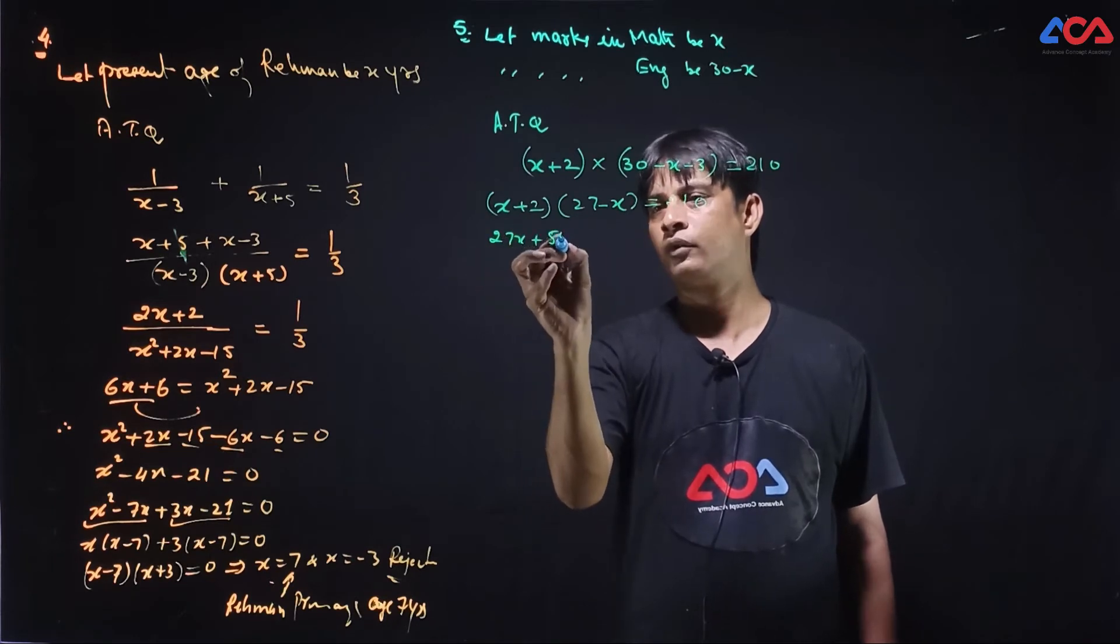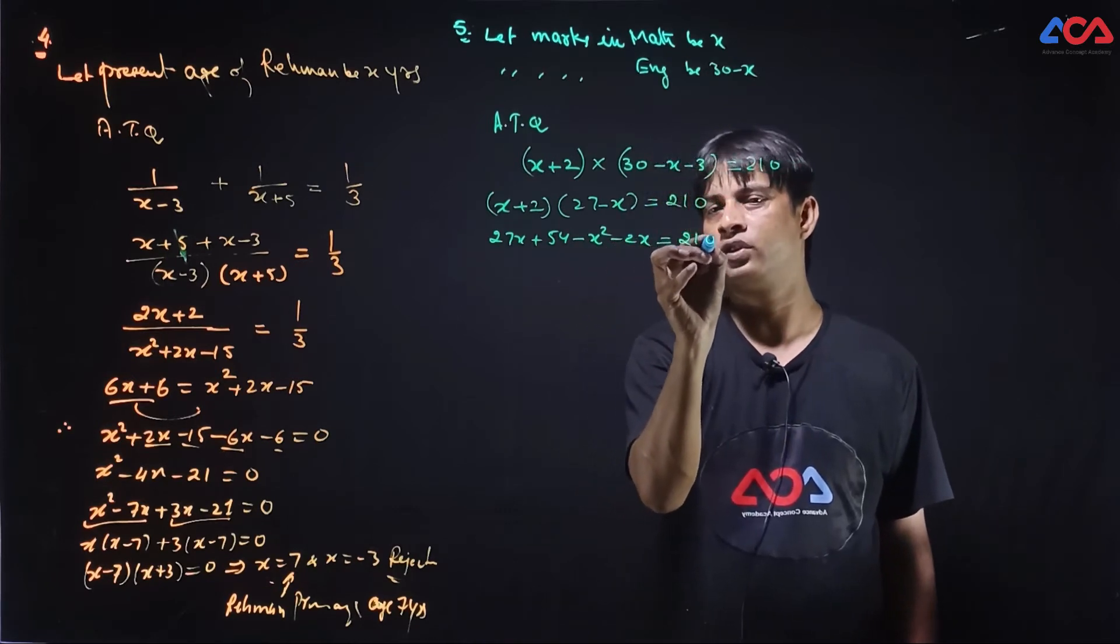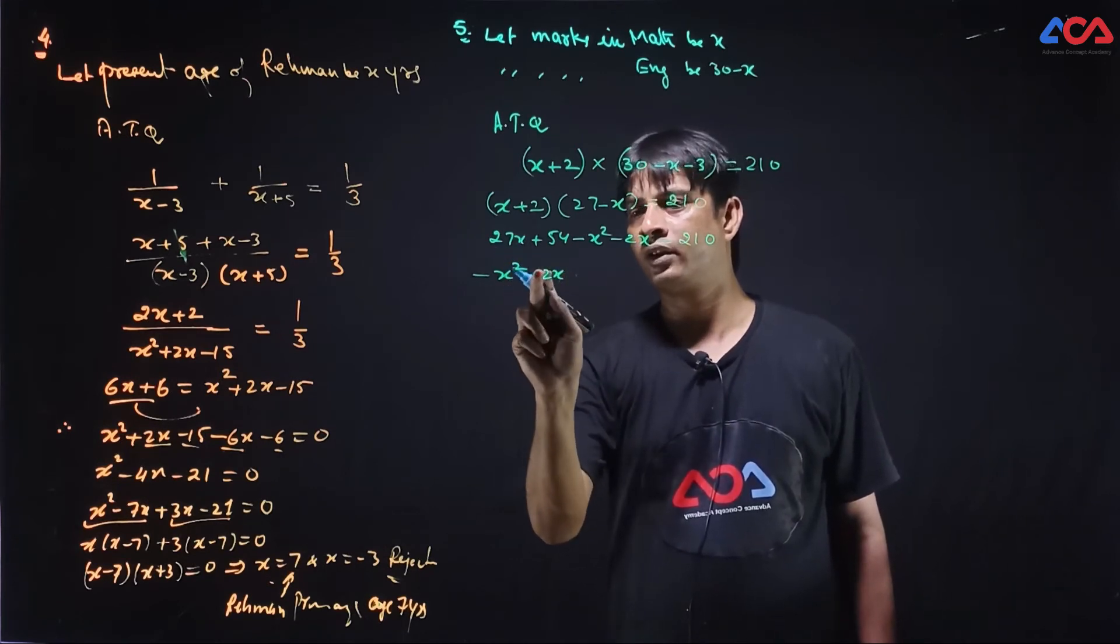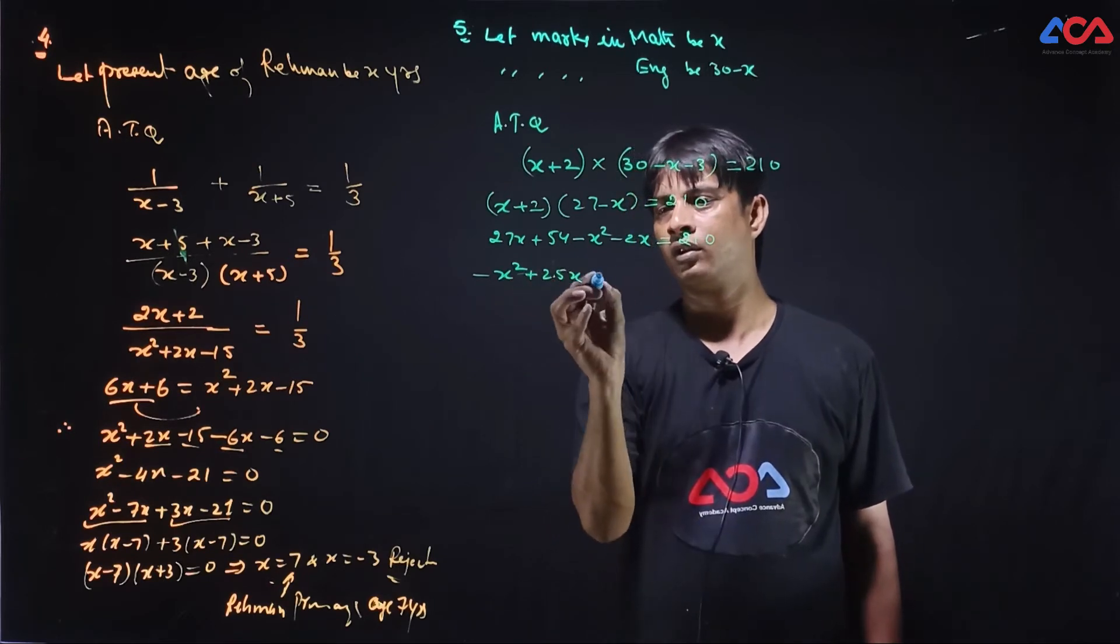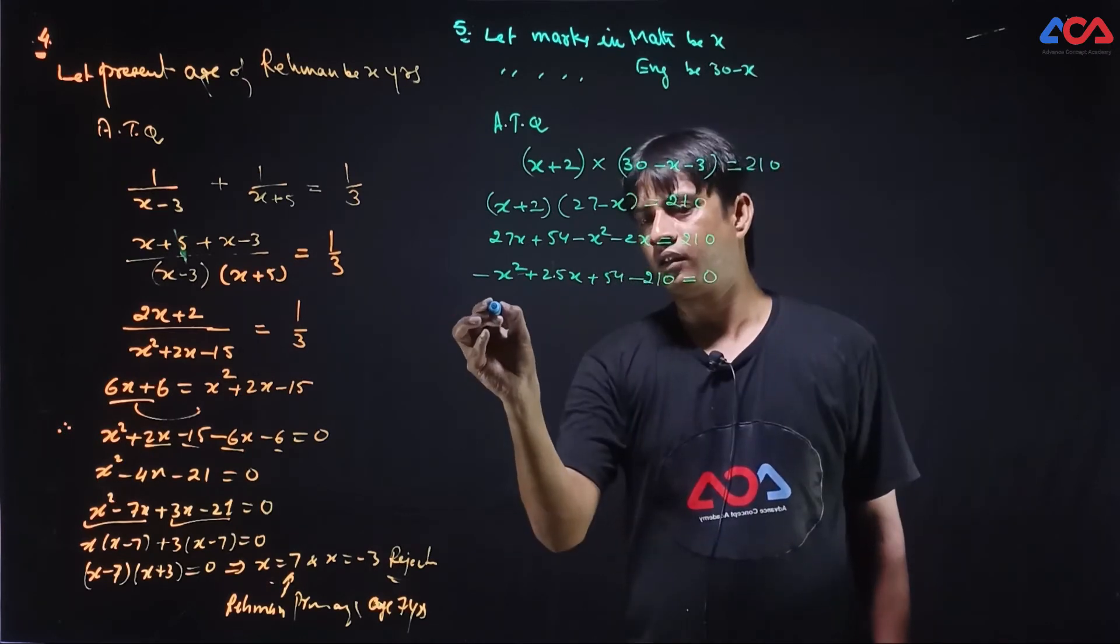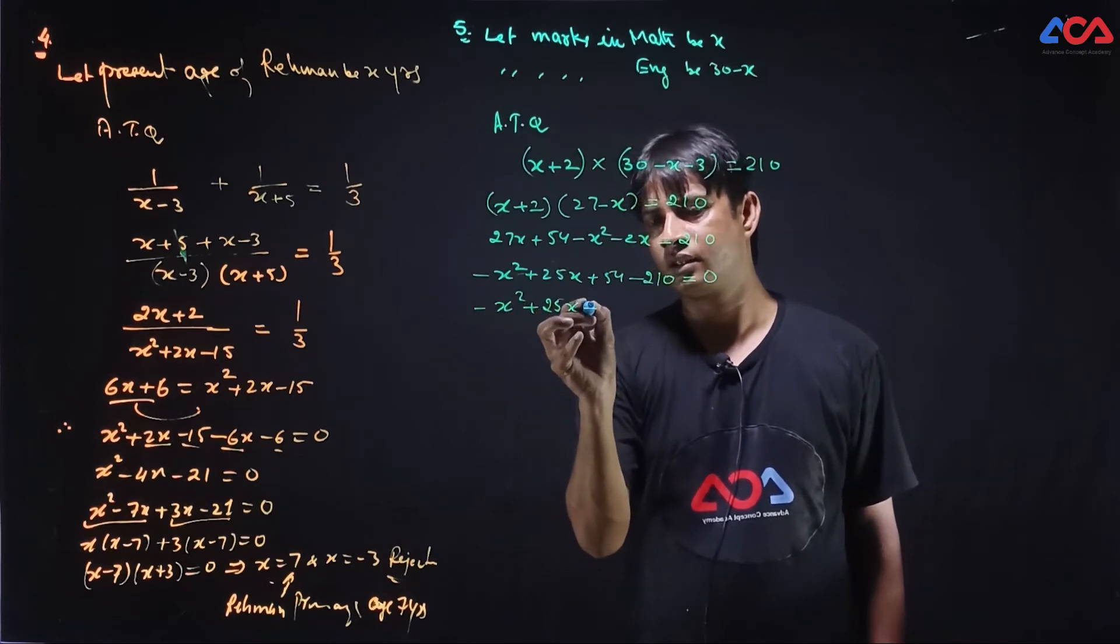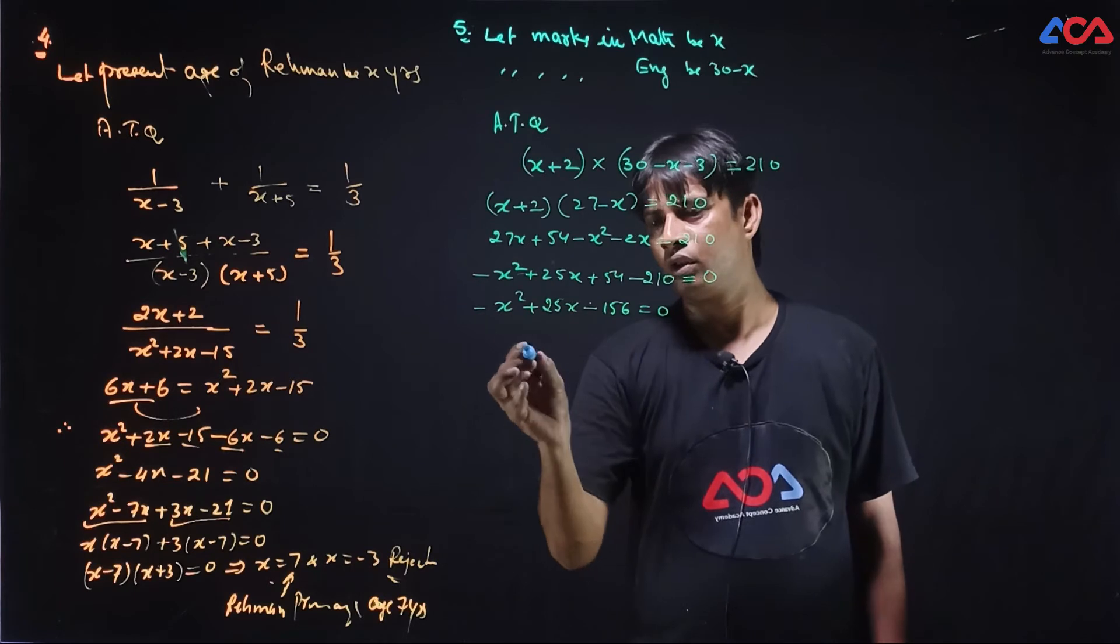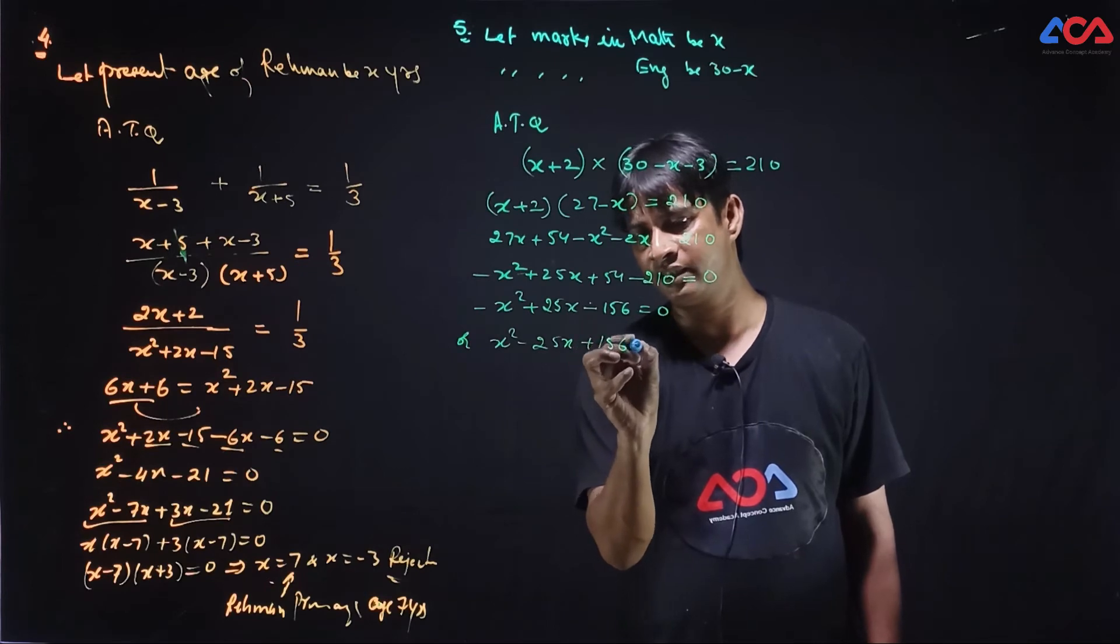Let's open 27x, 54 minus x square minus 2x which is equal to 2, 1, 0. Left, let's go to minus x square minus 2x and this will be 25x. 54 minus 2, 1, 0 which is equal to 0. Then minus x square plus 25x. So we can say x square minus 25x plus 156 is equal to 0.